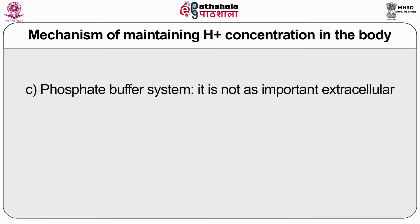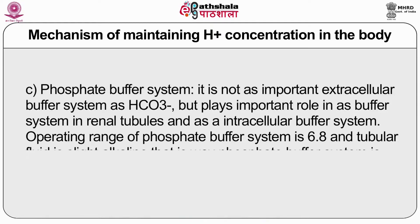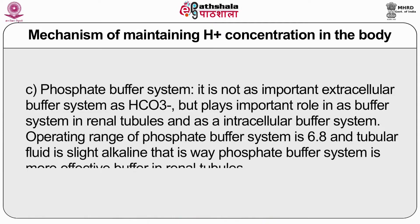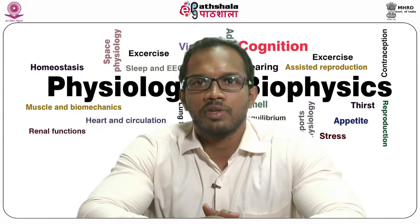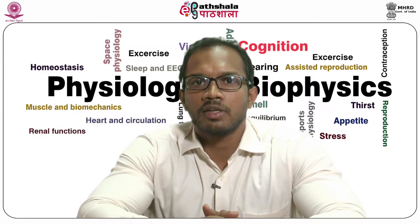Third is the phosphate buffer system. It is not as important an extracellular buffer as bicarbonate, but it plays an important role as an intracellular buffer system in the renal tubule. The operating range of the phosphate buffer system is pH 6.8, and tubular fluid is slightly acidic, which is why the phosphate buffer system is more effective in renal tubules. Phosphate concentration is very high in intracellular fluid compared to extracellular fluid, and the intracellular pH makes the phosphate buffer system more effective as an intracellular buffer.